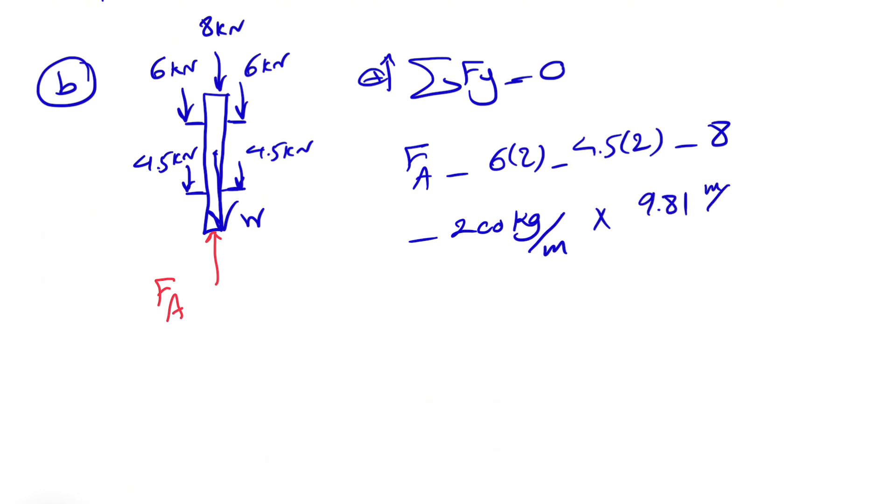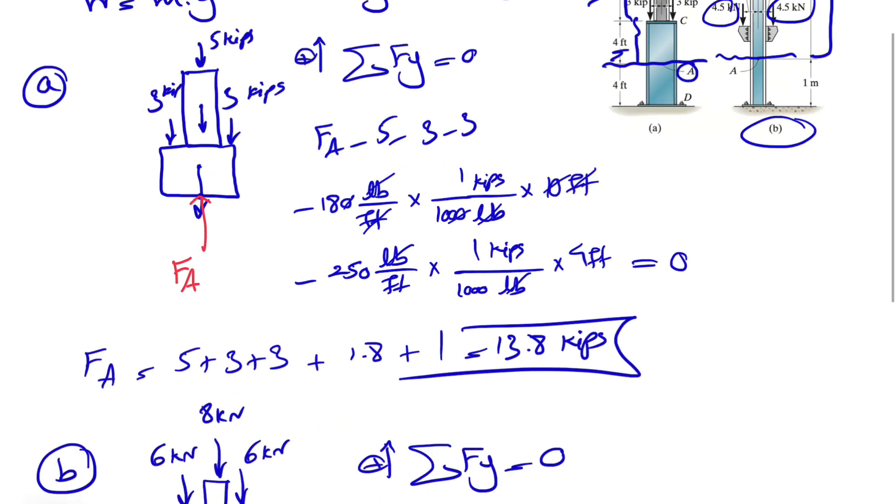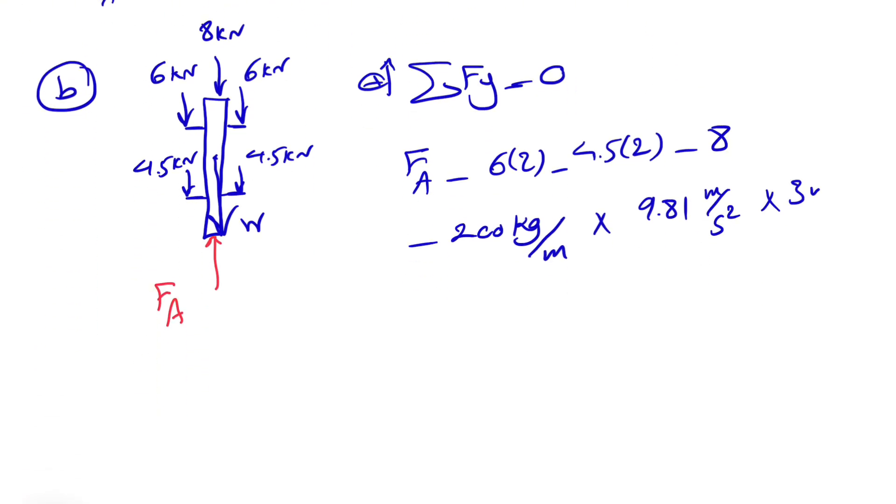So 9.81 meters per square second. This is going to give us the weight, but still we have a meter in the denominator that we need to get rid of. And that would be the length of this beam, which is three times three meters.